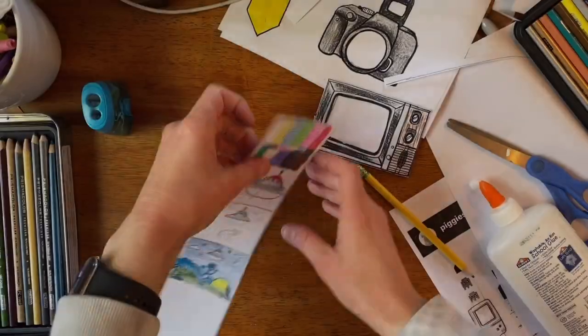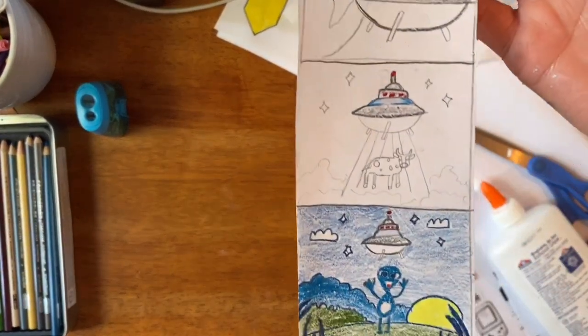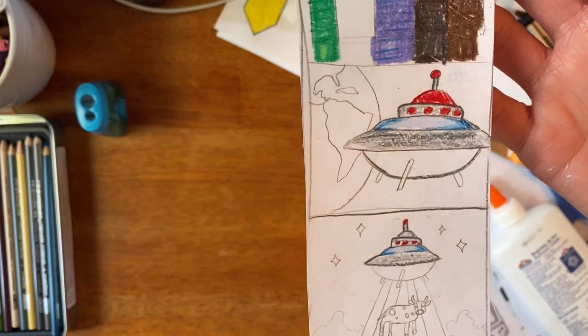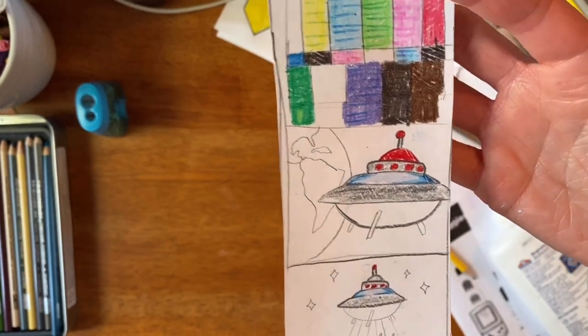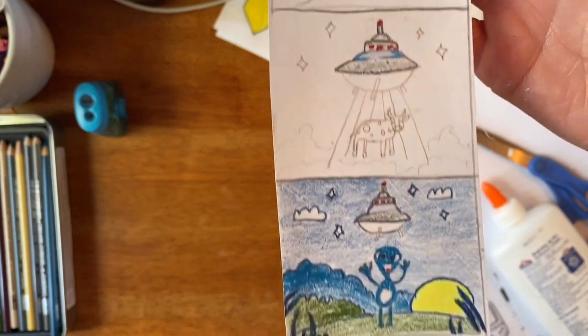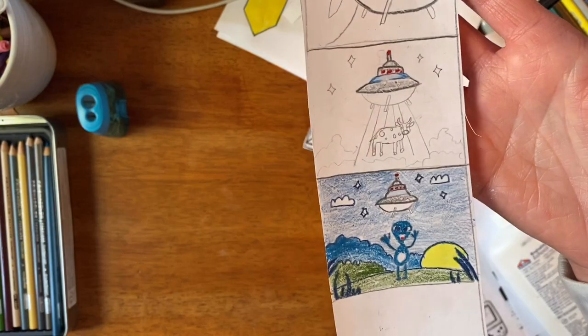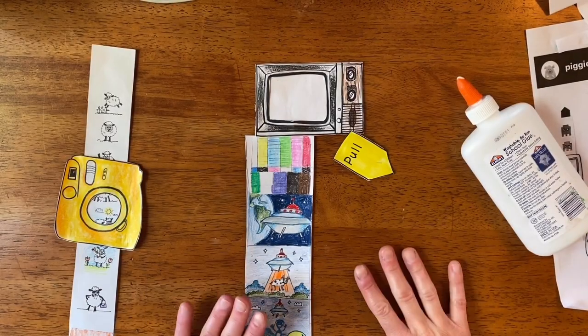I did want to share, as I color I'm coloring like a comic book strip. So I just kind of work my way through. I'm using colored pencils. You can use markers, crayons, you could leave it black and white and just do shading. It's really up to you. So I'm kind of working my way through each piece, so it's kind of like a little comic book strip.